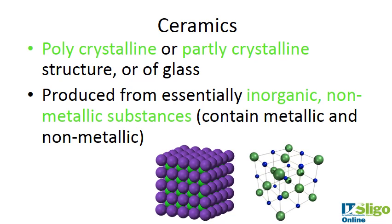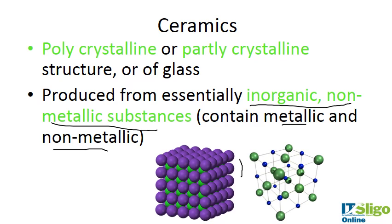Their structure is polycrystalline, partly crystalline, or of glass. The word 'crystal' infers quite a brittle property, which is what we think of with ceramics — drop a plate and it breaks. They are produced from inorganic nonmetallic substances, but they do contain metallic and nonmetallic ions, making the structure look similar to the metal structures covered earlier in the course.